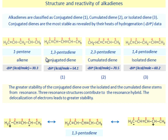Conjugated dienes are the most stable as revealed by their heats of hydrogenation data. The heat of hydrogenation of the isolated diene is nearly twice that of one pentene containing one double bond. This is as expected. The heat of hydrogenation of the conjugated diene is less than that of the isolated diene.